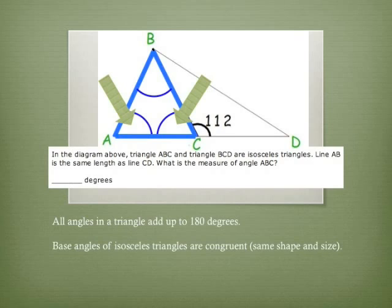Because this is an isosceles triangle, I also know that these two angles right here are congruent. They're the same shape and size.